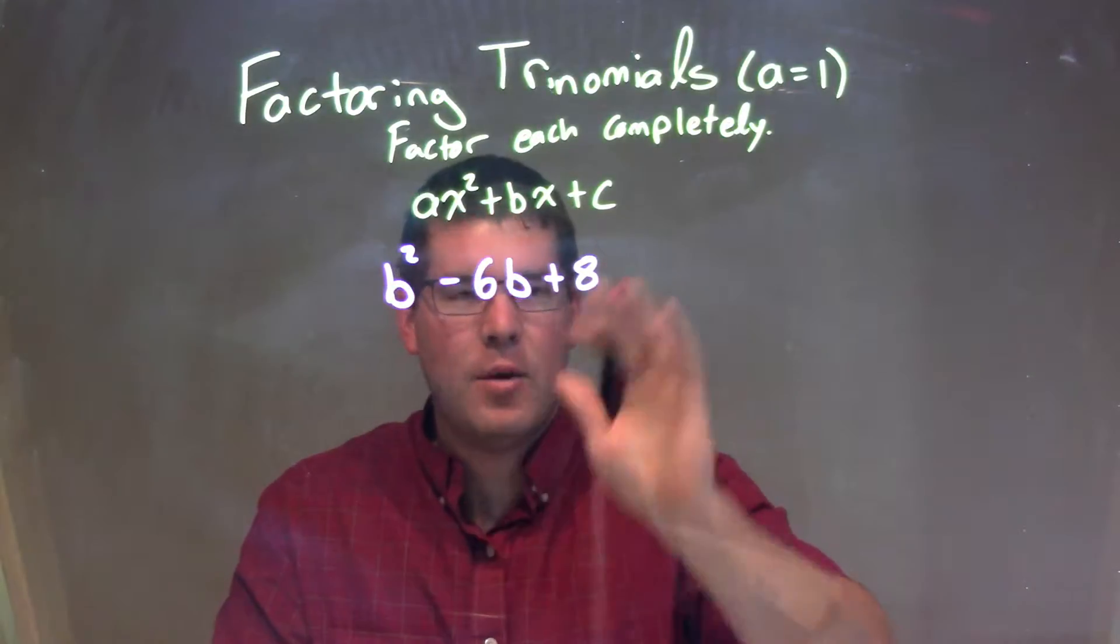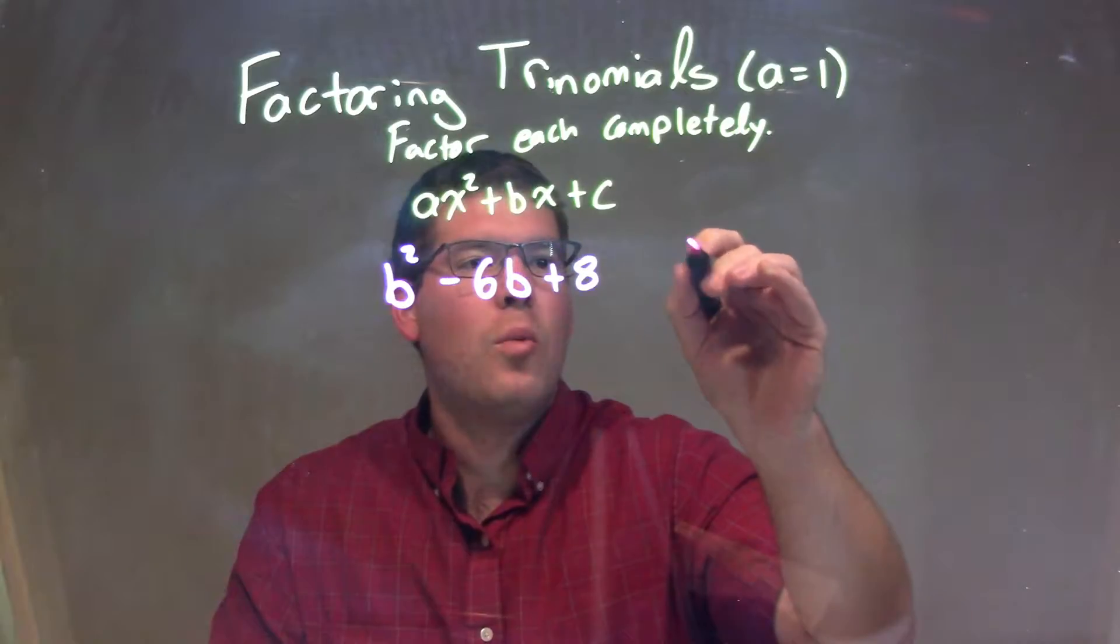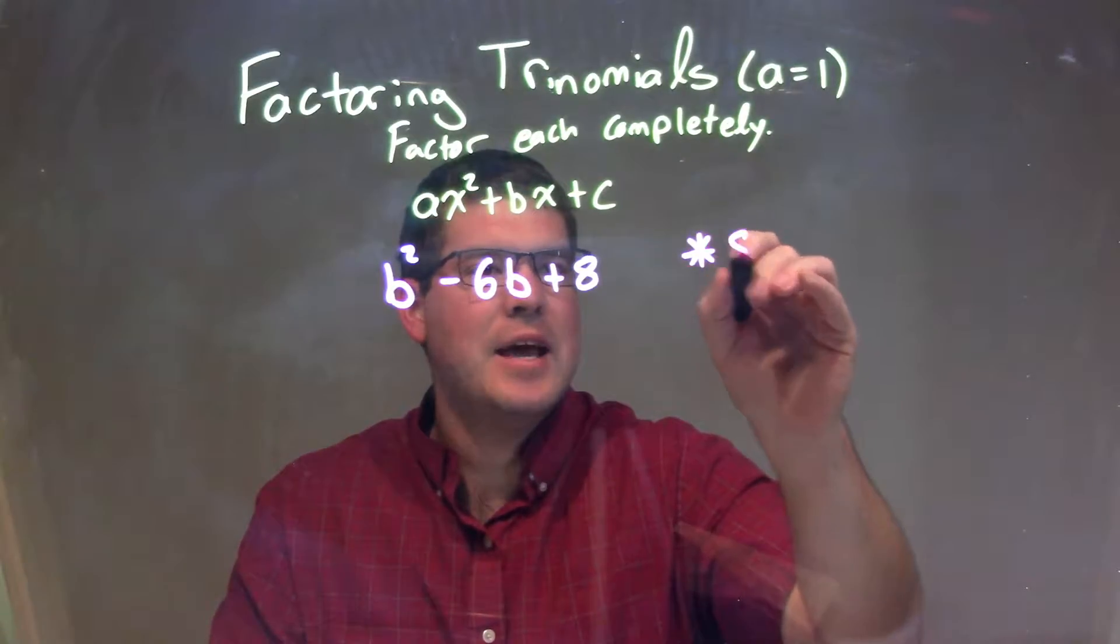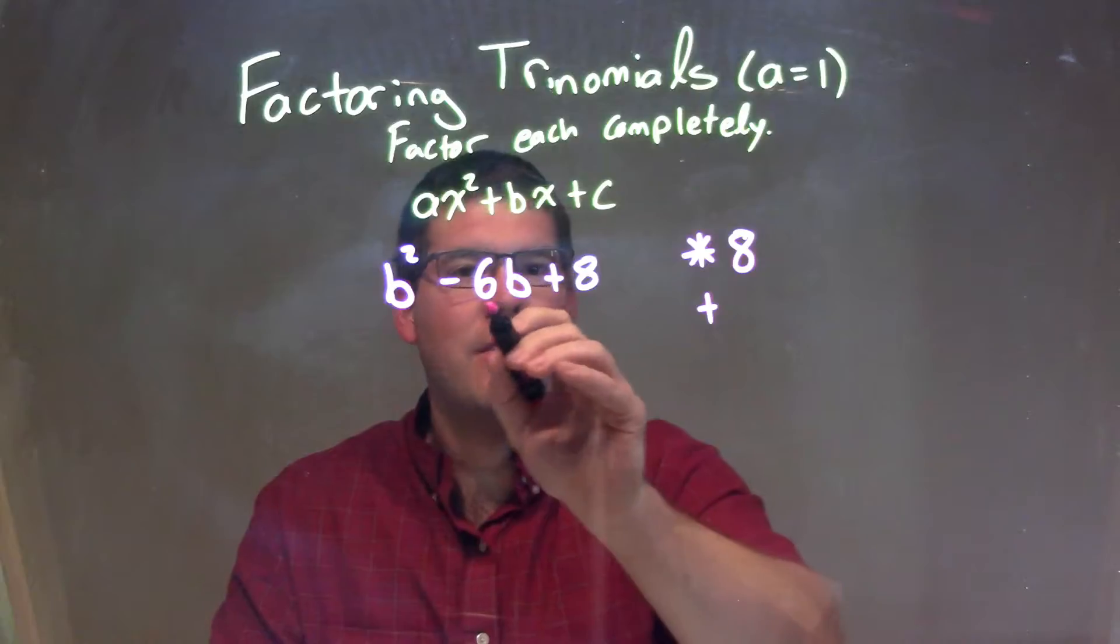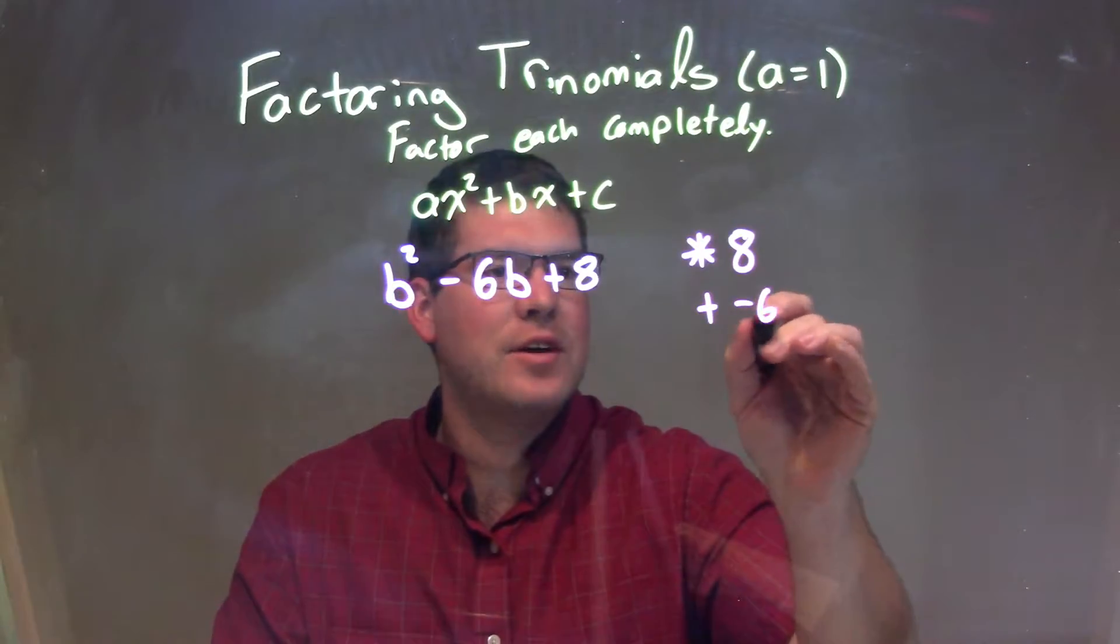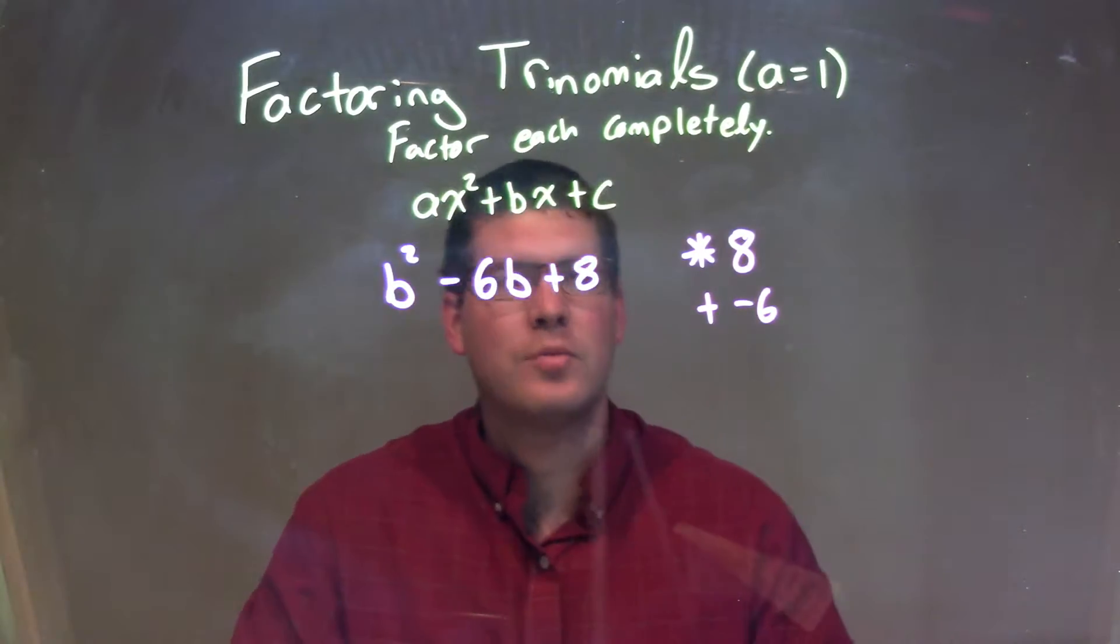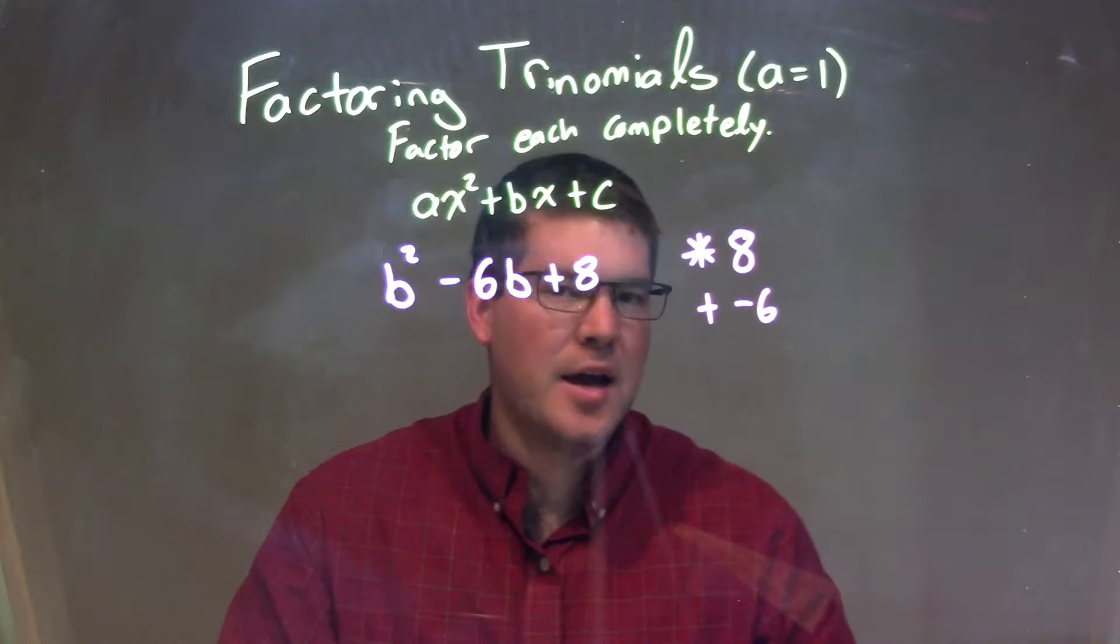So since we have that, we have to ask ourselves this question: What multiplies to be my c value, which is 8, but adds to be this b value, a negative 6? What two numbers multiply to be a positive 8 but add to be negative 6?